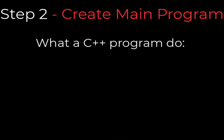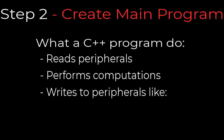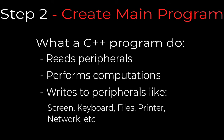In C++, a program starts with a main function. The main function consists of a list of sequentially executed instructions. A C++ program reads peripherals, performs computations, and writes to peripherals. Peripherals might be the screen, the keyboard, files, the printer, the network, and so on.